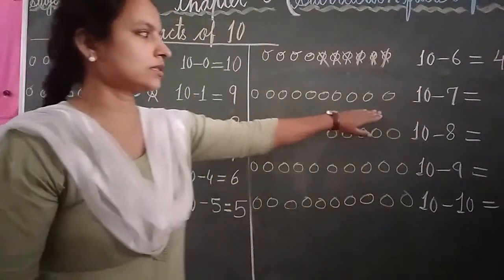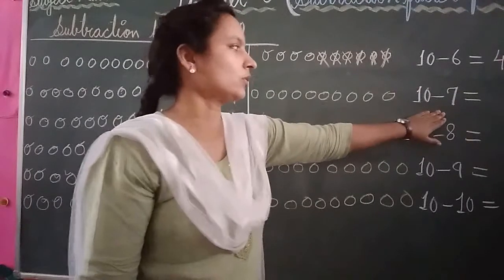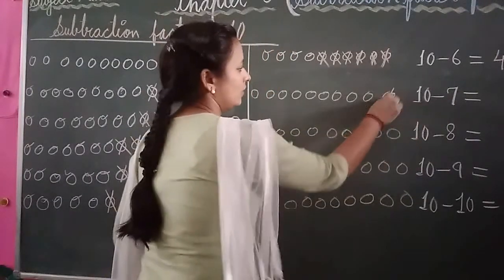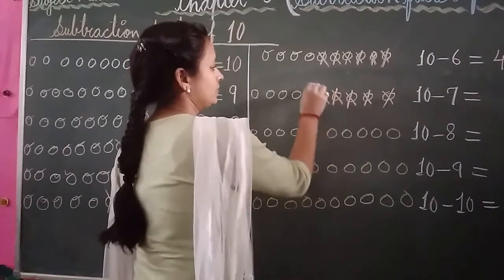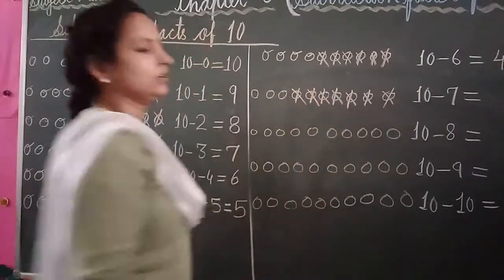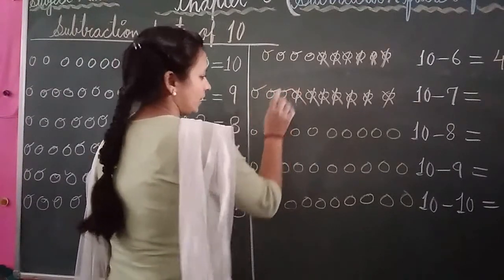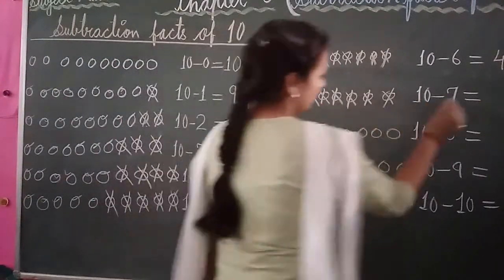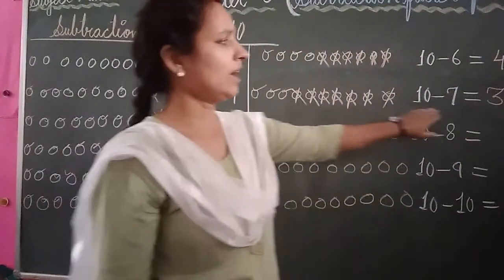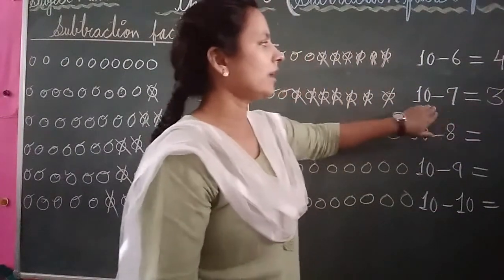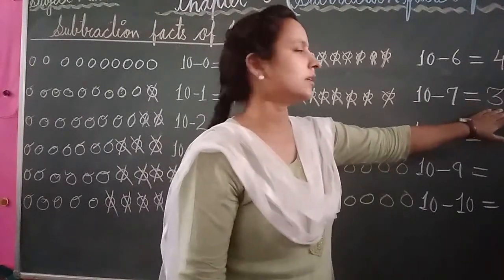Again draw your 10 balls. Write: 10 minus 7. Cross out 7 balls: 1, 2, 3, 4, 5, 6, 7. Count the balls left: 1, 2, 3. How many balls are left? 3. Write your number: 3. The answer is 3. 10 minus 7 equal to 3.